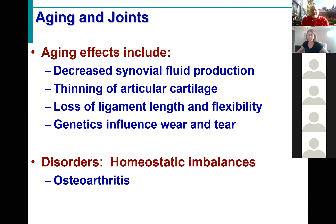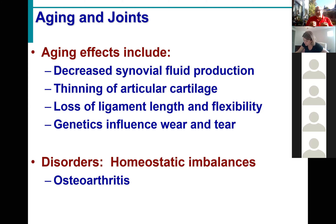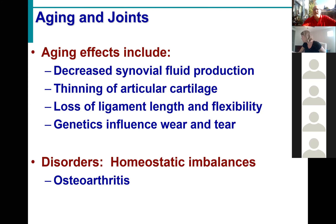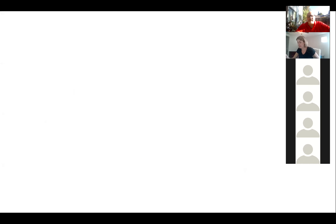One place we see these homeostatic imbalances is in arthritis. Arthritis simply means inflammation of the joint, and there are almost a dozen different types. Let's talk about the two most common: they both involve inflammation of the joints but are very different in their effects. Let's start with osteoarthritis.